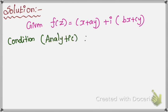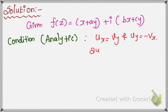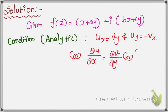The condition for analytic is: ux = vy and uy = minus vx, or equivalently, ∂u/∂x = ∂v/∂y and ∂u/∂y = minus ∂v/∂x. These are the Cauchy-Riemann equations.